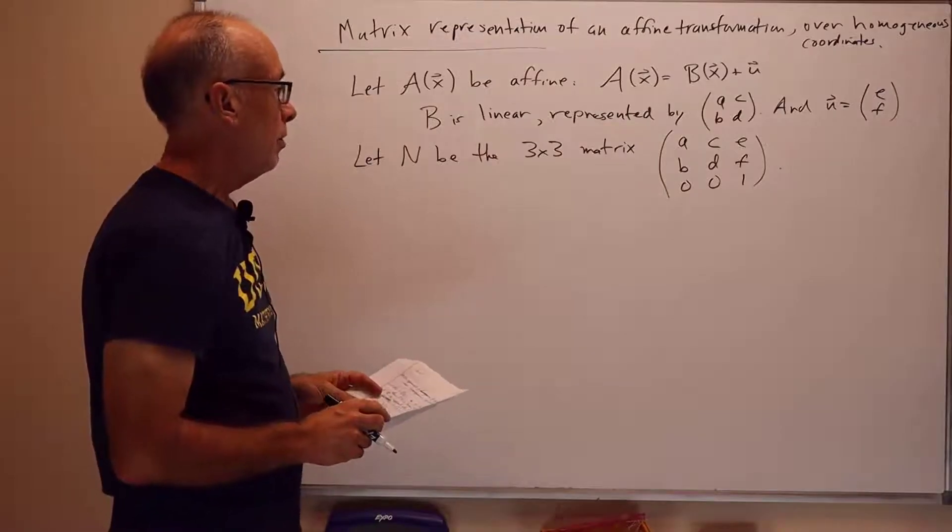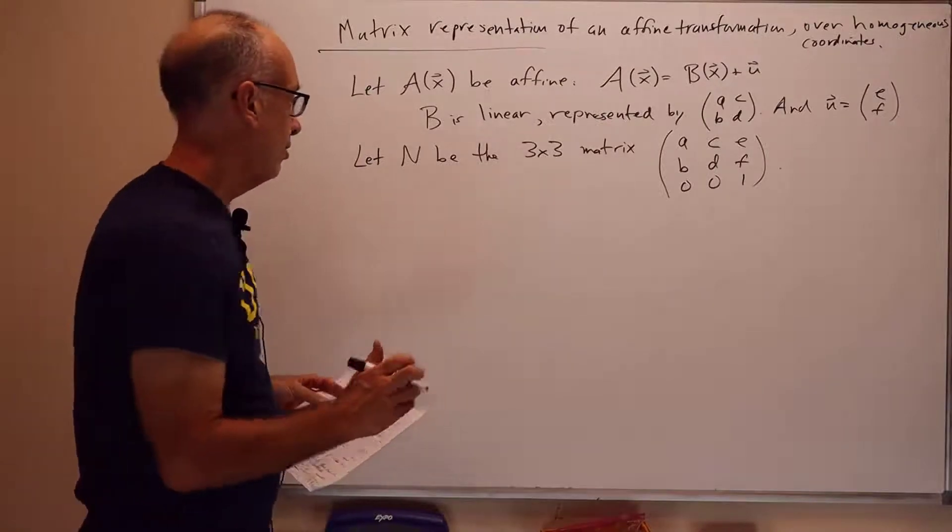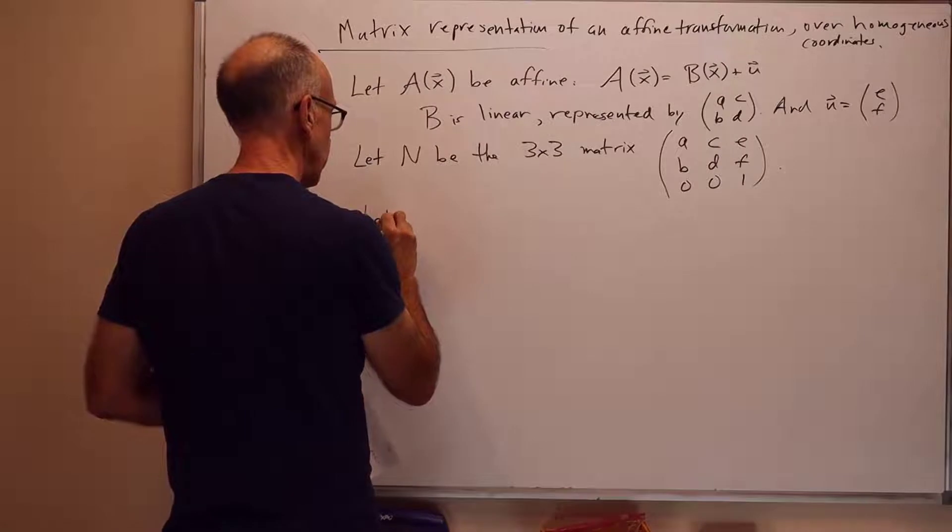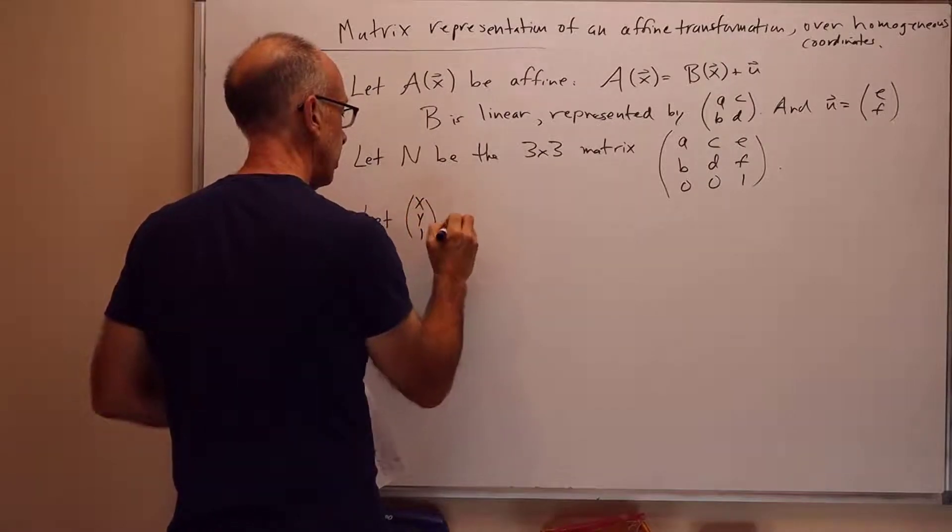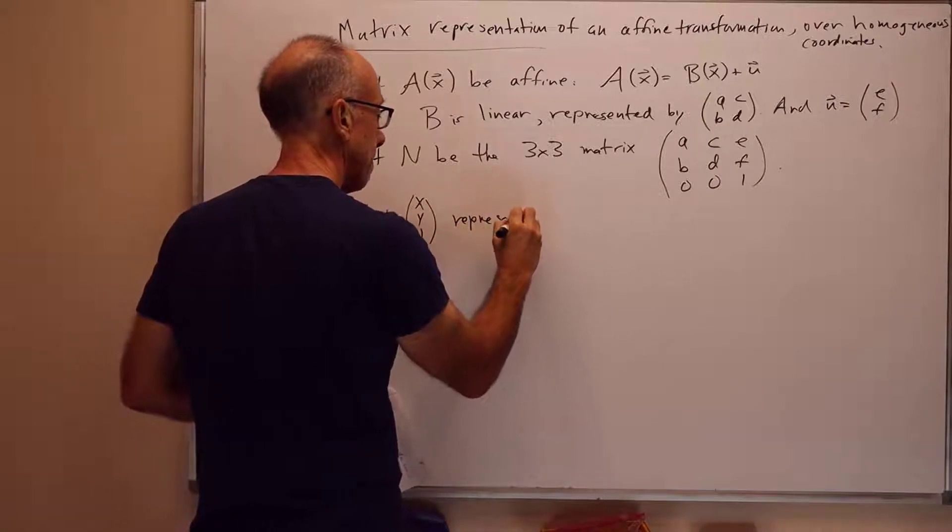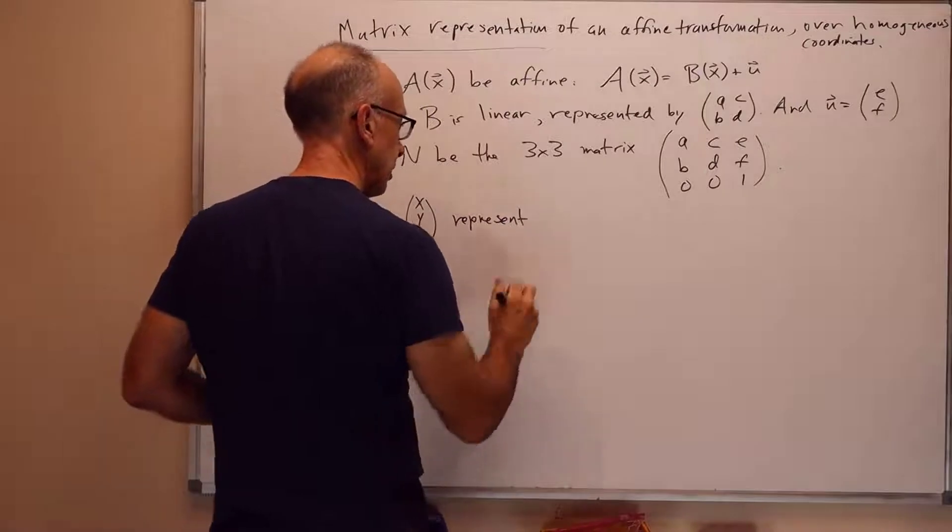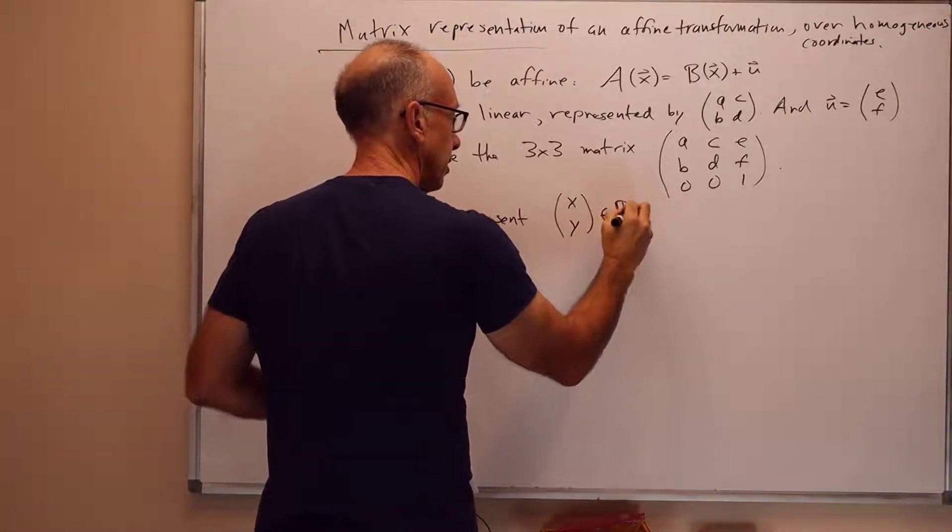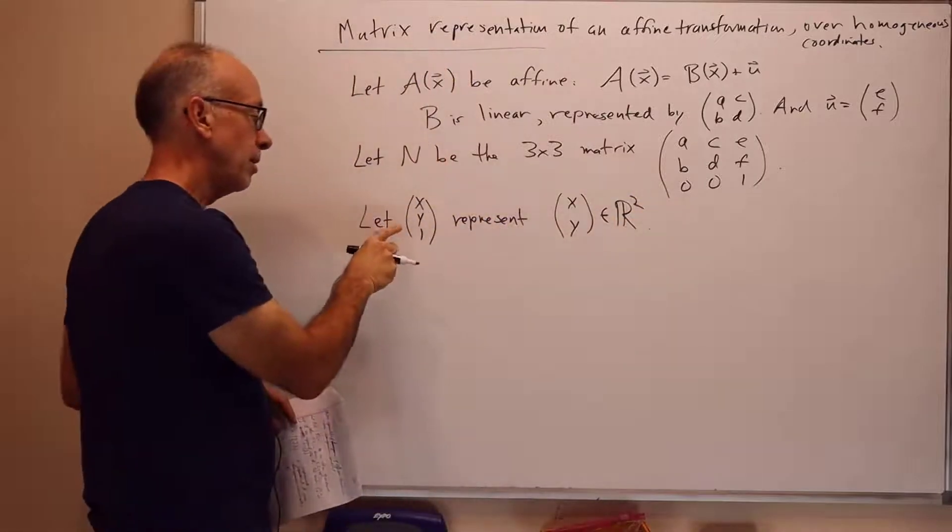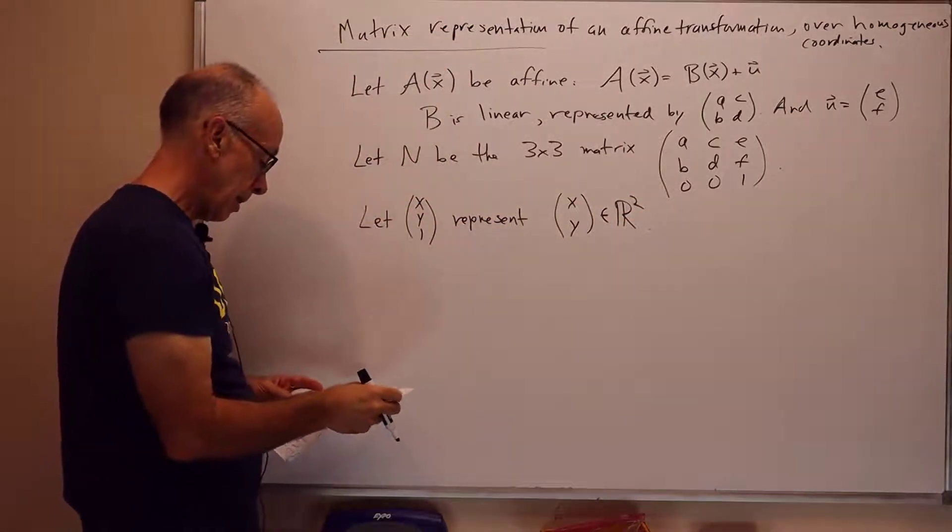So, let's see how N represents the transformation A in R2 using homogeneous coordinates. So, let x, y, 1 be a representation of x, y in R2. So, x, y, 1, or homogeneous representation of the point x, y.